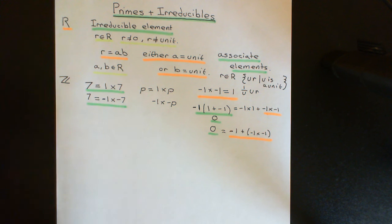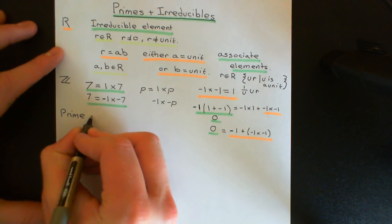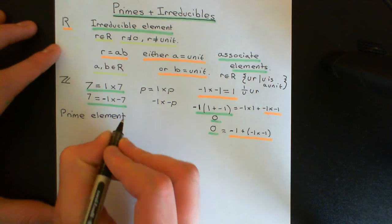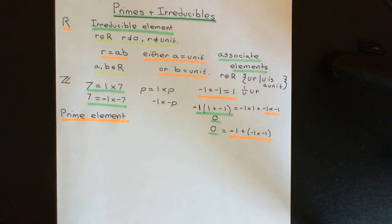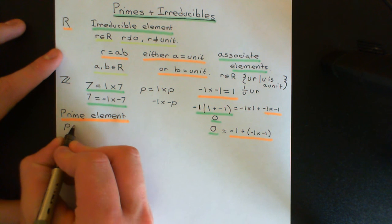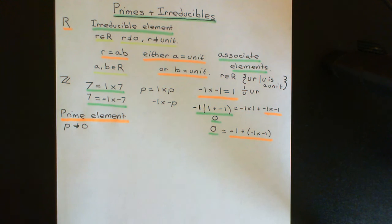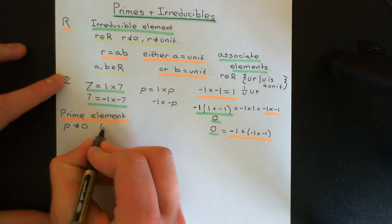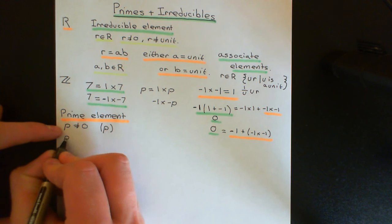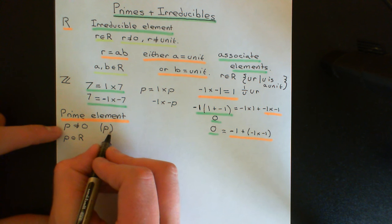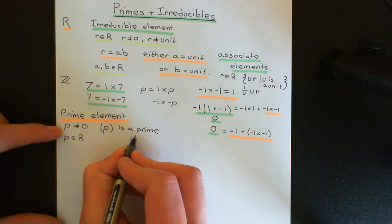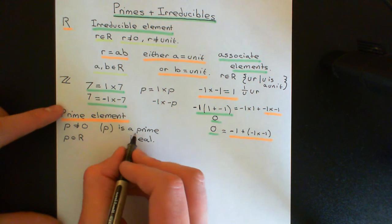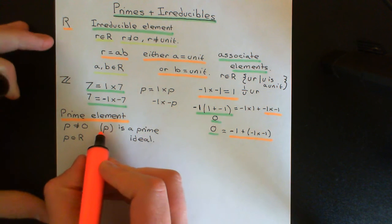Now let's look at the definition of a prime element — not to be confused with irreducible. A prime element can be defined in an arbitrary non-zero commutative ring. The first condition is that zero is not a prime element. An element P is called a prime element if the principal ideal generated by P is a prime ideal.